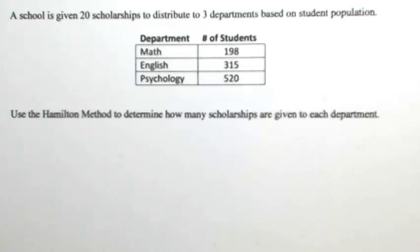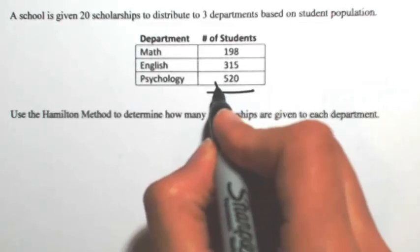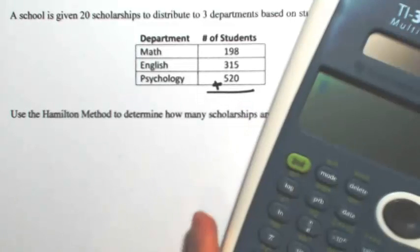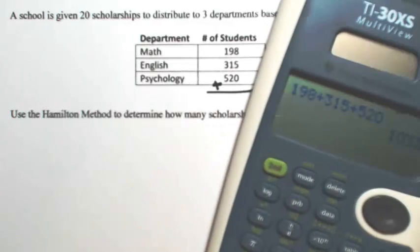The first thing we need to do is figure out what portion each department has in regards to the entire population. So we're going to add up all of the number of students: 198 plus 315 plus 520. So there are 1,033 students.